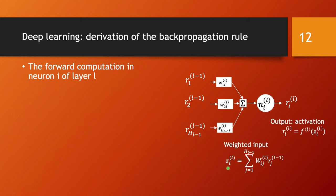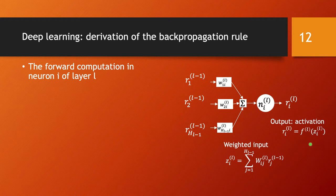The weighted input coming into this neuron is denoted by z — specifically z corresponding to layer l and the ith component. It's the sum of the weights times the vector coming from the previous layer. Out of this neuron, the output is the activation, denoted r, specific to layer l and computed at the ith component. So r of layer l, neuron i, is the activation function f specific to this layer applied to the weighted input z. That's how each neuron computes.